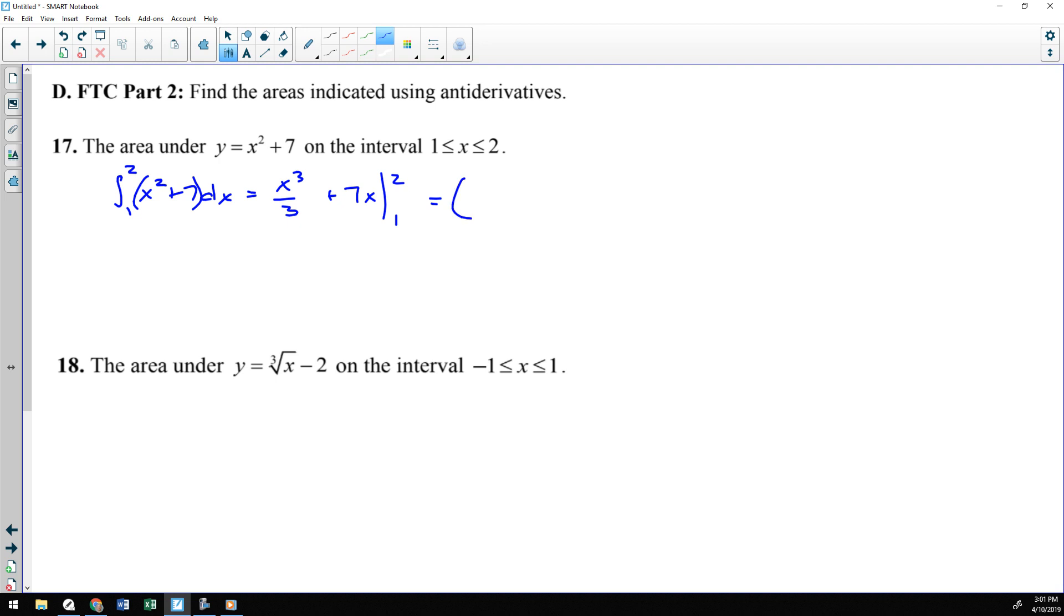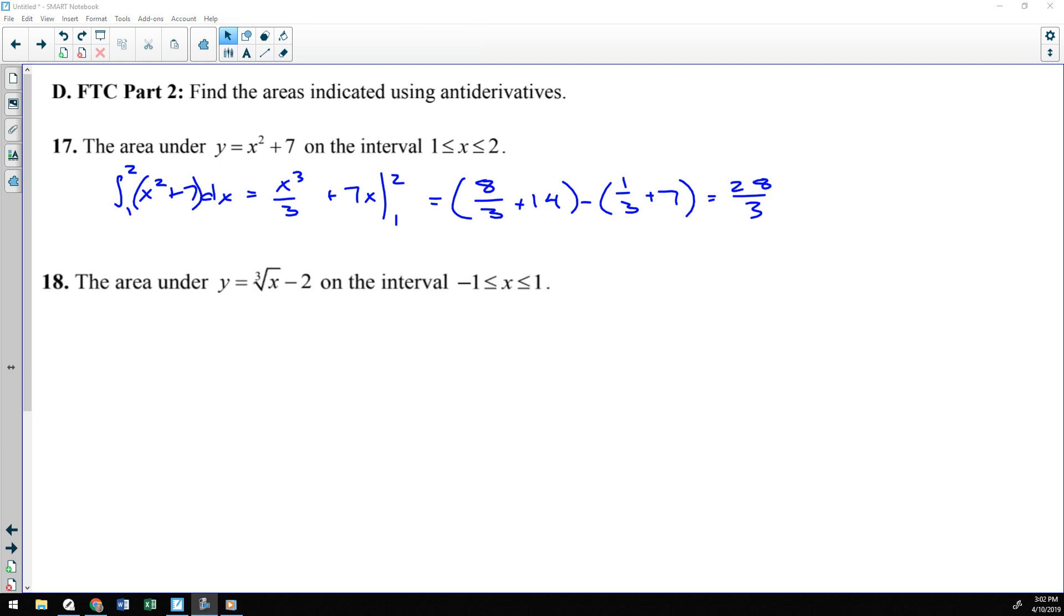So, we will evaluate that from one to two, which means I plug in the two first. Two cubed is eight over three plus seven times two is 14, minus then I plug in the one. One cubed over three plus seven times one, and then we can do the arithmetic to clean that up. There's 17, cleans up to 28 thirds.